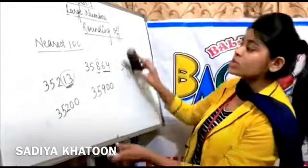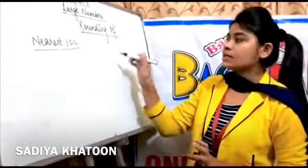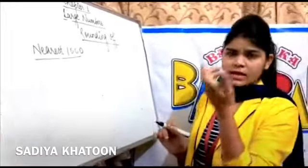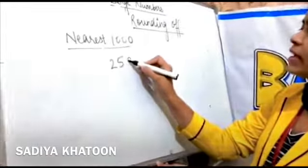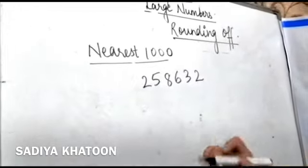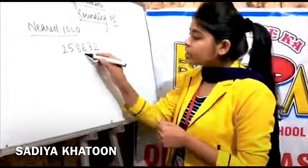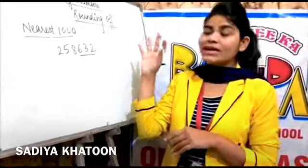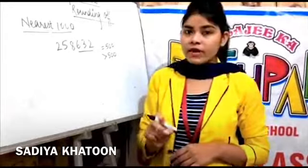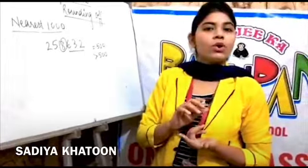The last topic is rounding off to nearest thousand. When rounding to the nearest thousand, you look at four digits: ones, tens, hundreds, thousands — and everything before that you write as it is. Let's take the example 258,632. For nearest thousand, you check the last three digits and see whether they are equal to 500 or greater than 500.